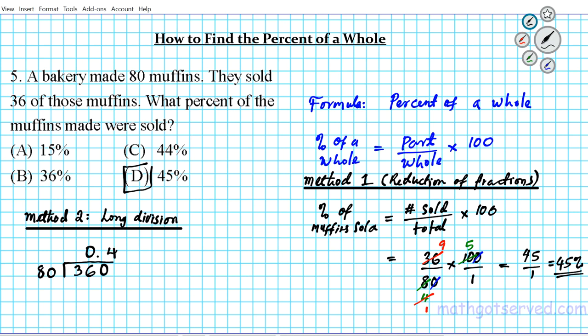It goes into 36 four times, and then 4 times 80 is going to be 320. So you multiply these, you have 320. And then you subtract. And what do you have left? 6 minus 2 is 4, so 40. How many times does 8 go into 40? 8 goes into 40 five times.